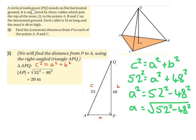A vertical radio mast, PQ, stands on flat horizontal ground. PQ is the vertical radio mast, and the orange triangle is the horizontal ground. It is supported by three cables which join the top of the mast Q to the points A, B, and C on the horizontal ground.